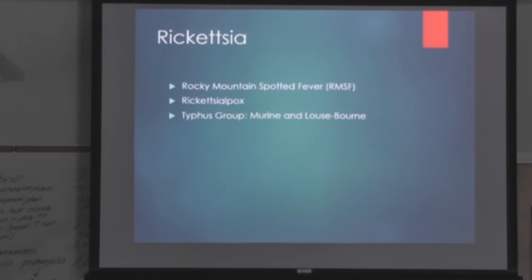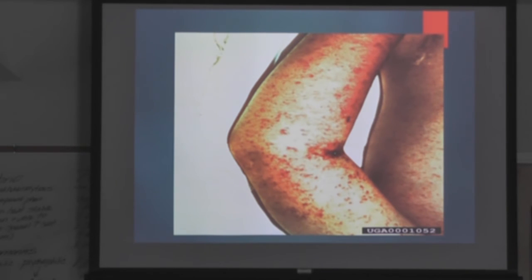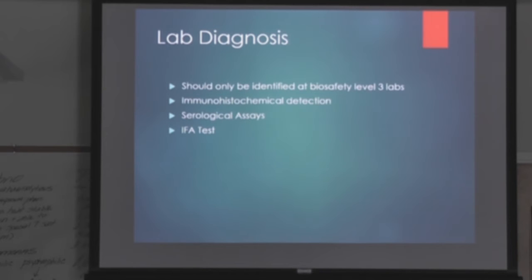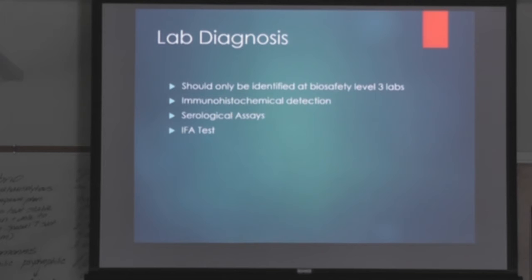Rickettsia — remember it's divided into groups based on clinical infections. There are pictures of what some of the rashes look like — usually on the trunk and extremities, and on some forms it moves to the face. It should only be identified in a biosafety level 3 lab. The IFA test is considered the gold standard method for antibody detection for Rickettsia — that's pretty important.